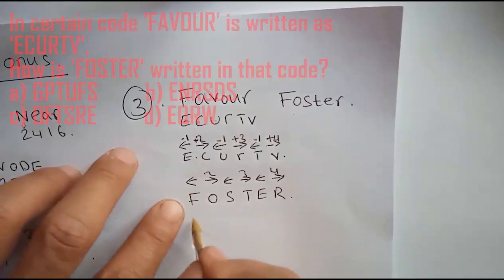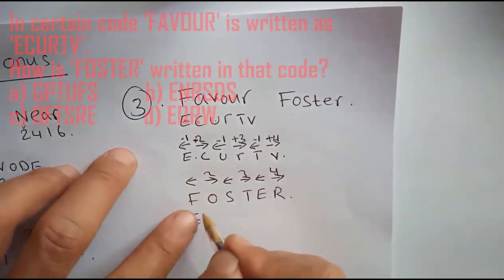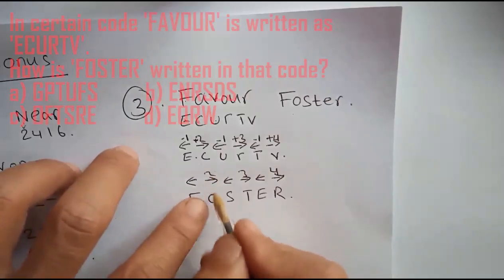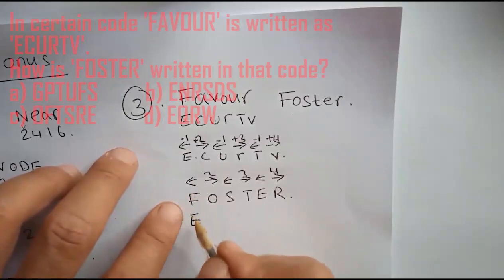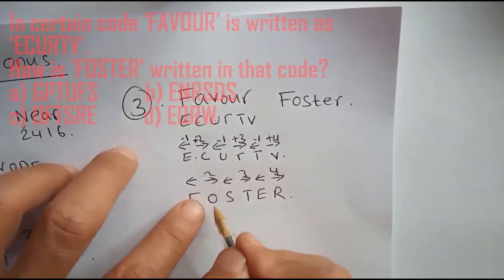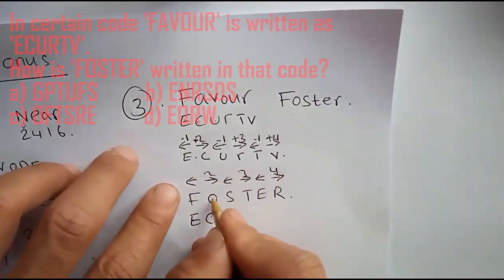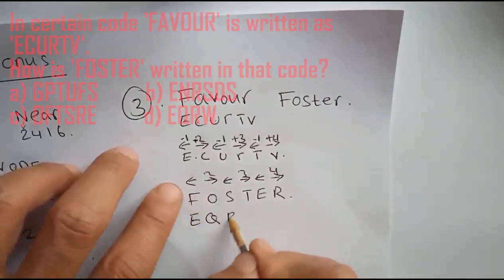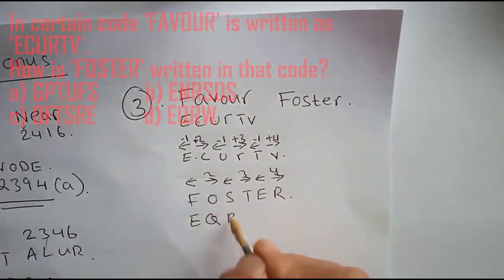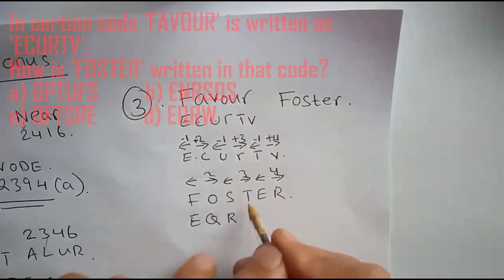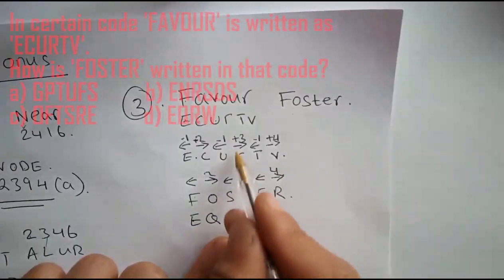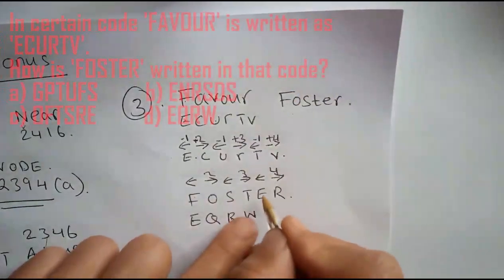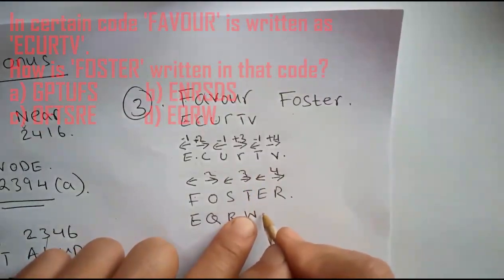Applying this to FOSTER: F goes back one to E. O plus two becomes Q. S goes back one to R. T plus three becomes W. E goes back one to D. R plus two becomes V. So FOSTER becomes E-Q-R-W-D-V, which is option D.